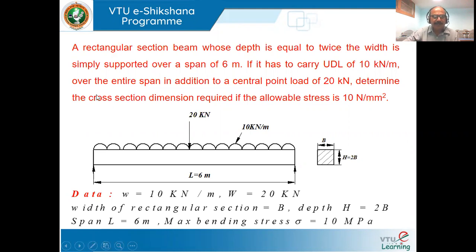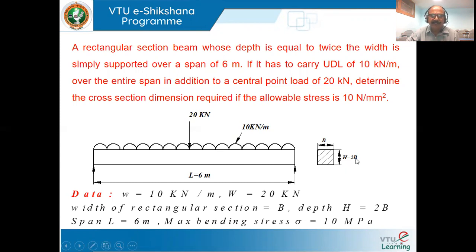Here, a rectangular section whose depth is equal to twice the width is simply supported for a span of six meters. It is a rectangular cross section where depth H is equal to two times its width B, therefore H = 2B, and the span is six meters.